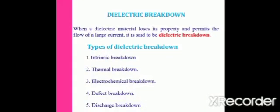Dielectric breakdown is a very important property of dielectric materials. When a dielectric material is placed in an electric field and the field is increased to the critical field, the dielectric loses its insulating property and becomes conducting. This is called dielectric breakdown.